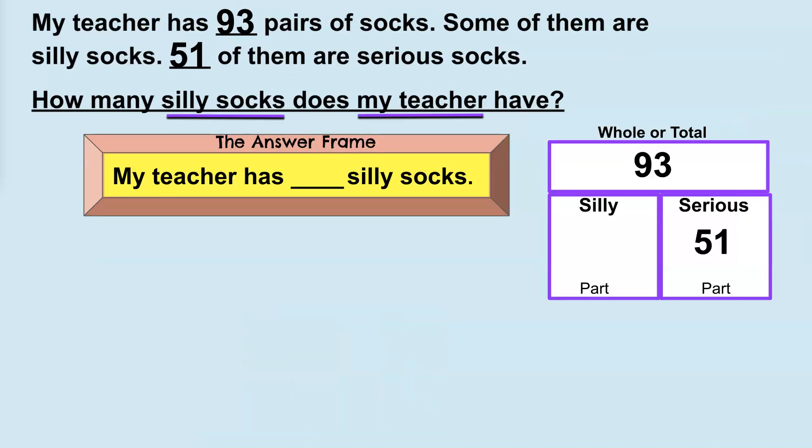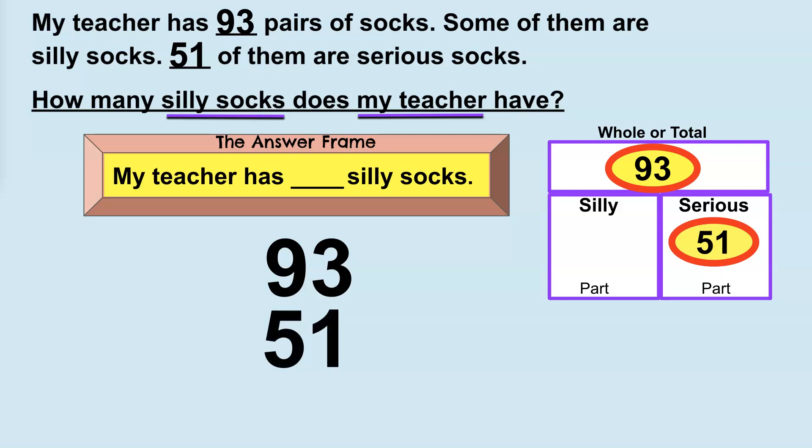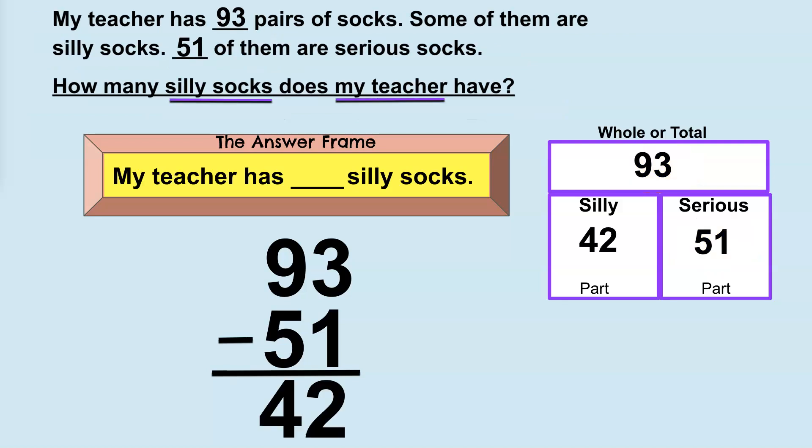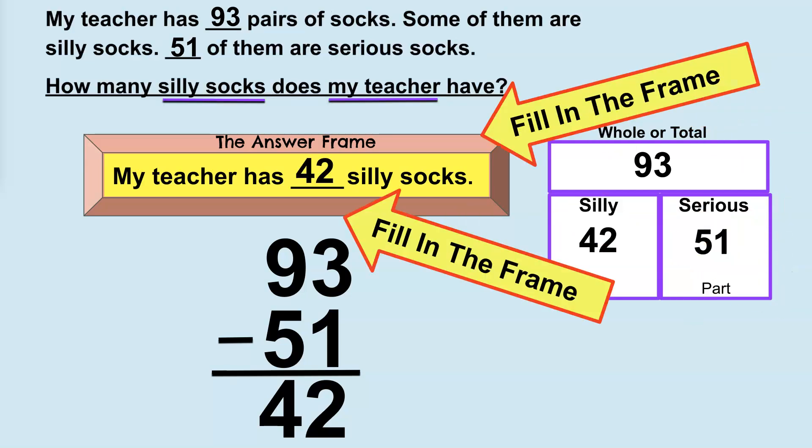So, anytime you know the whole and one of the two parts, you must take the known part away from the whole to determine the unknown part. Take away is also known as subtraction. Here's another strategy you could use to solve. But you're never done until you fill in the frame. The answer is the completed frame.